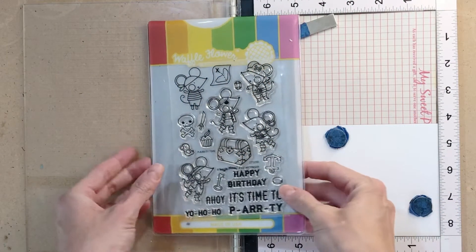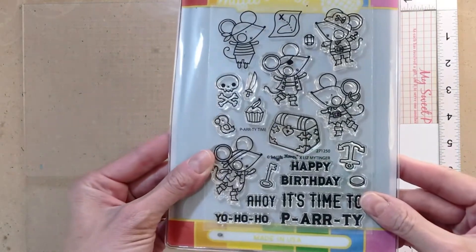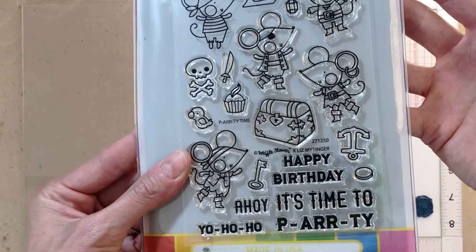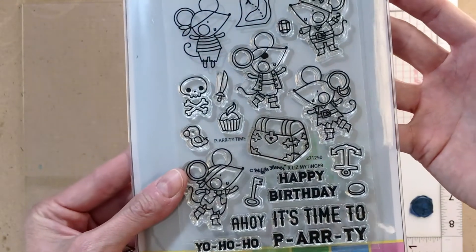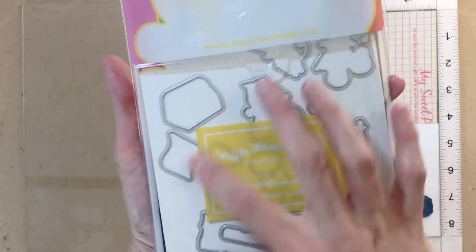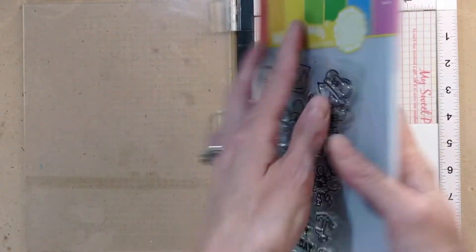All the images for today's cards are from the PARTY stamp set. This is the stamp set here. If you get the combo you get the stamps and in the cloud storage bag you will also get the matching dies on their own magnetic sheet in the back.